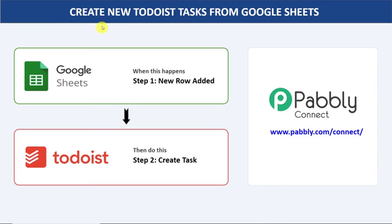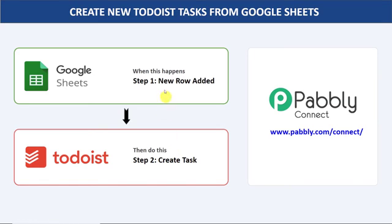Hello everyone. In this video, we will learn how to automatically create new Todoist tasks from Google Sheets. The idea is that if new data is entered in Google Sheets, a task will be automatically created in Todoist. But the issue is there is no direct connection between Google Sheets and Todoist, so I will be using an integration and automation software called Pabbly Connect that integrates Google Sheets and Todoist.